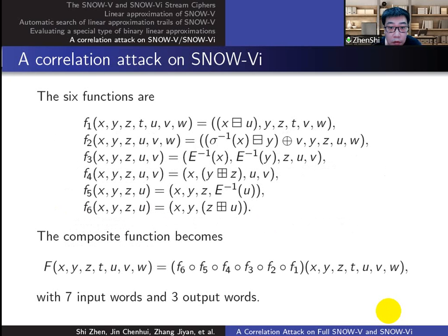For SNOW-6, we can construct sub-functions and the composite function in the same way. As the four LFSR taps are mutually independent in SNOW-6, we shall take all of them as input variables, which differs from the composite function of SNOW-5.